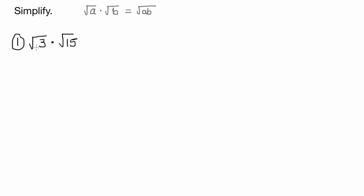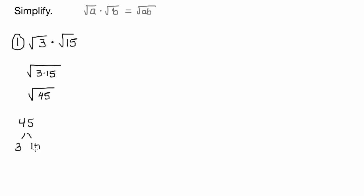So that means that the square root of 3 times the square root of 15 is the square root of 3 times 15, and 3 times 15 is 45. So we multiplied, but now we have to simplify. We're going to write 45 as a product of its prime factors: 3 and 15, and then 3 and 5.